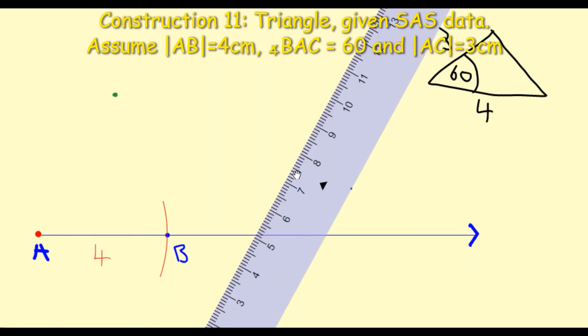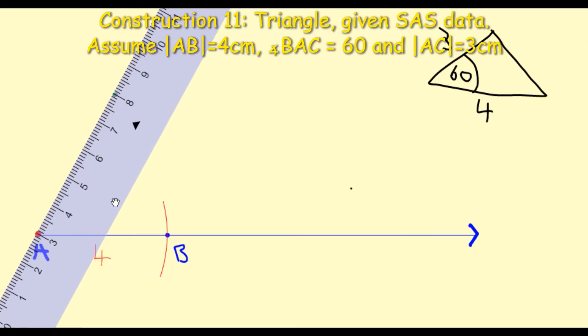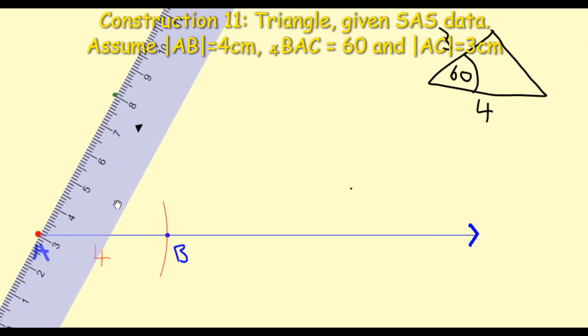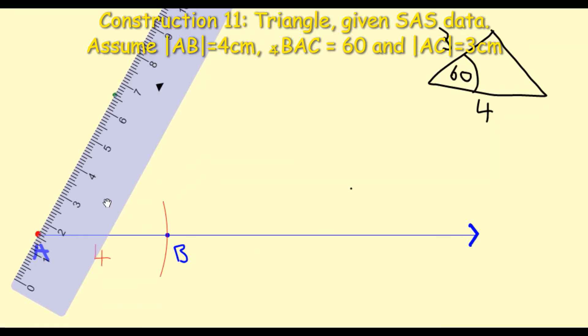So I'm going to move my ruler over now going through A and the green dot, and with my pencil I'm going to draw that line starting at A and going through the green dot. It doesn't matter where that green line goes to, so if I remove my ruler I'm going to put the arrows at the top of that to denote that it is a ray.